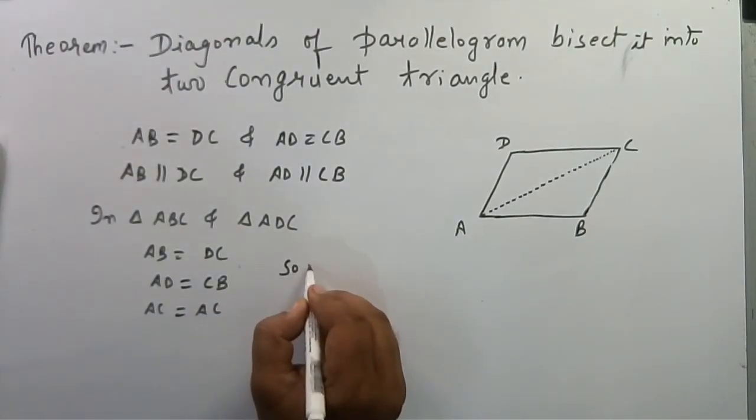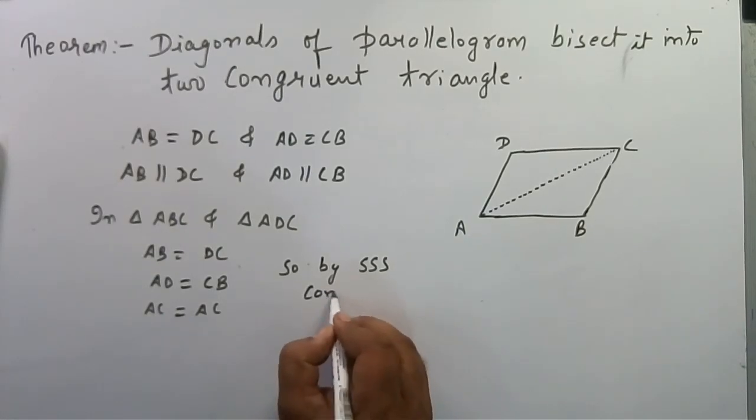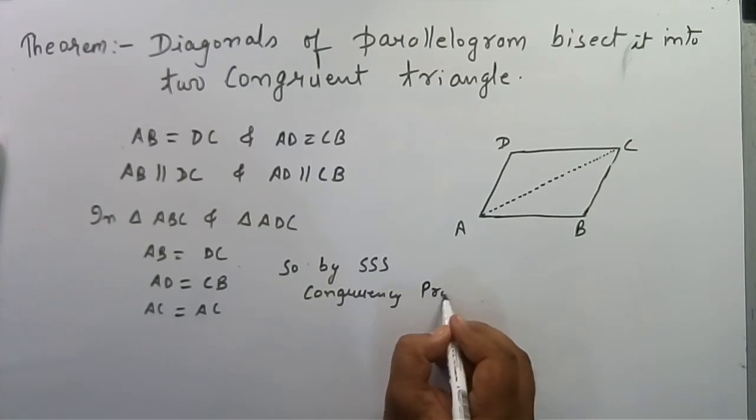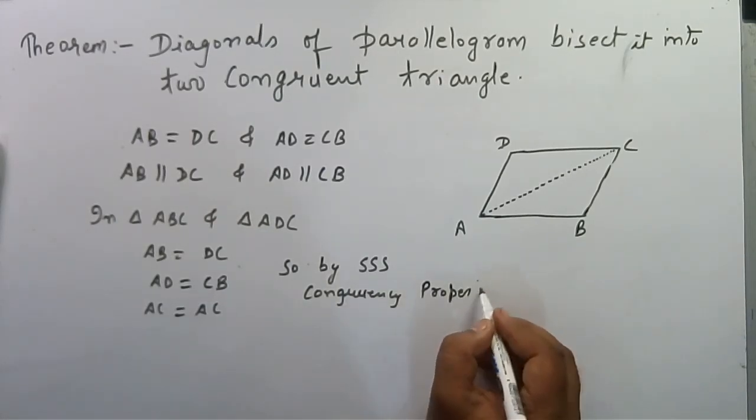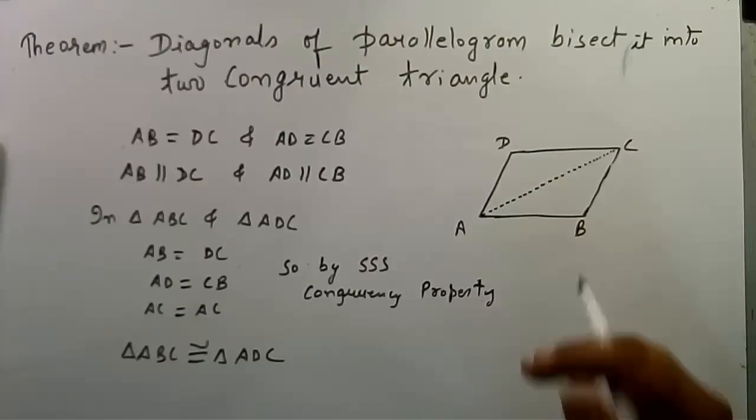So by Side-Side-Side congruency property, triangle ABC is congruent to triangle ADC.